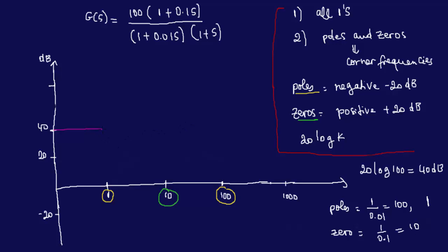Until we hit the next corner frequency at 10. So we want to make sure we have the slope. We can't go all the way because then it wouldn't be a minus 20 dB. So this is supposed to be a minus 20 dB slope. It's not drawn to scale, that's why I'm having a hard time drawing it, but you get the point. I'm supposed to draw a minus 20 dB slope until I hit the next corner frequency. This is supposed to be a minus 20.